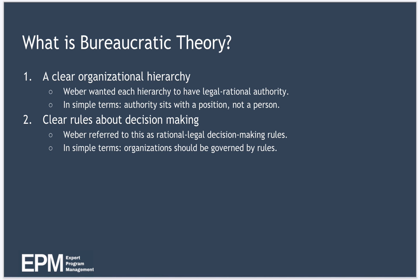Because of the problems Weber saw with traditional authority, he favoured a more rational approach to running an organisation and helping it to achieve its goals. And there are two parts to Weber's bureaucratic theory: the first is a clear organisational structure, and the second is clear rules about decision making.